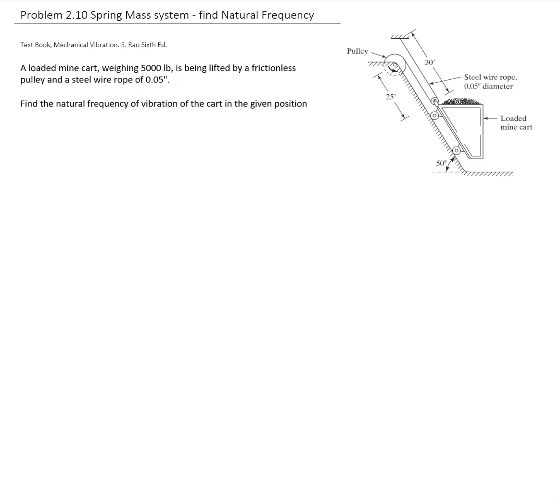We have a loaded mine cart weighing 5,000 pounds that is lifted by a frictionless pulley and a steel wire rope of 0.05 inches diameter. We need to find the natural frequency of vibration in the given position.